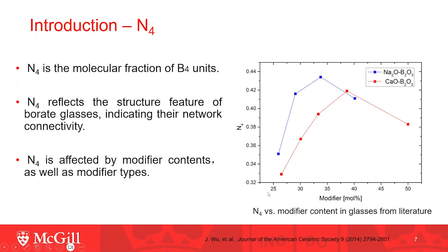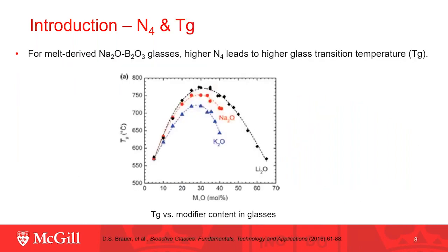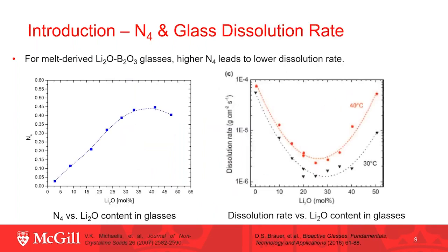N4 is affected not only by modifier content but also by modifier type. At low modifier content, N4 of sodium borate is higher than that of calcium borate. N4 also impacts properties of borate glasses. For example, for sodium borate glasses, initial modifier addition increases N4 leading to an increase in glass transition temperature, then further modifier addition decreases N4, resulting in a decrease in glass transition temperature. Similarly, for lithium borate glasses, as N4 increases with increasing modifier content there is a decrease in dissolution rate.